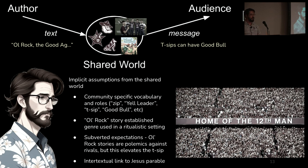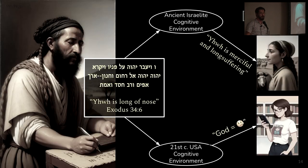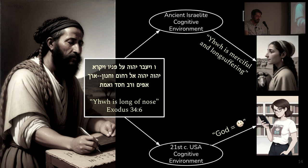You might be asking: nice fun story about T-sips and emojis, but what does this have to do with the Bible? The whole point is that the Bible does the exact same thing. This is the core thesis: the Bible, like all works of written communication, leaves many elements implicit to be filled in by the audience's assumptions. To cooperate with the authors, we need to reconstruct as best as possible the shared world or cognitive environment of the original author and the audience.